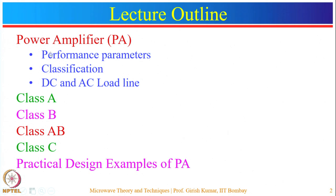In this lecture we will talk about power amplifiers and their various performance parameters, and how these parameters affect performance. Then we will see the various classes of power amplifiers, which depend upon the output current flow. Then we will see the circuit analysis, DC and AC load lines, and selection of the operating point. We will discuss class A, class B, class AB, and class C power amplifiers, followed by two practical design examples — one of 2 watt and another of 30 watt power amplifier.